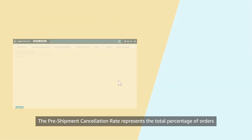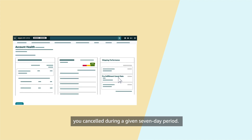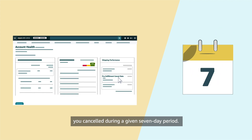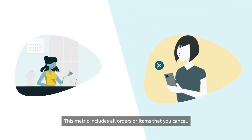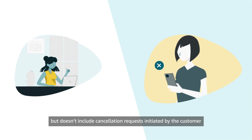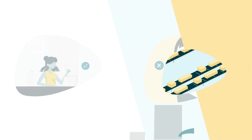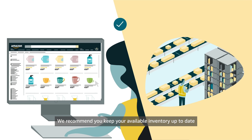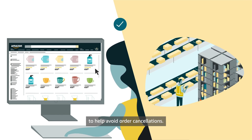The pre-shipment cancellation rate represents the total percentage of orders you cancelled during a given seven-day period. This metric includes all orders or items that you cancelled, but doesn't include cancellation requests initiated by the customer using the order cancellation options in their Amazon account. We recommend you keep your available inventory up to date to help avoid order cancellations.